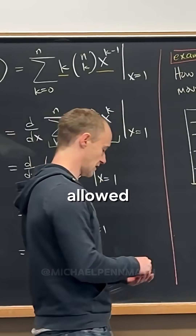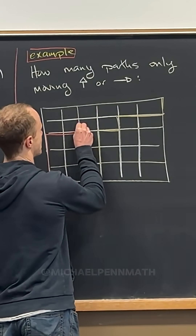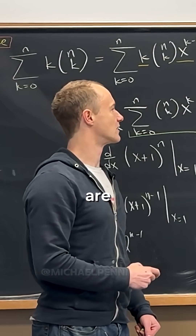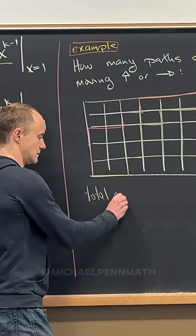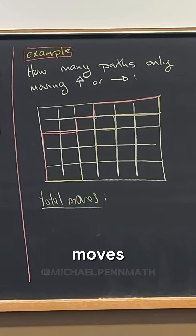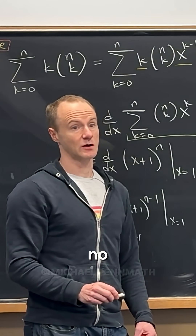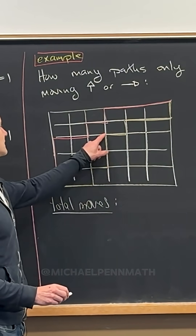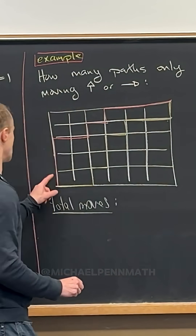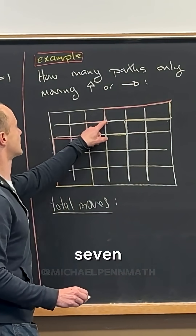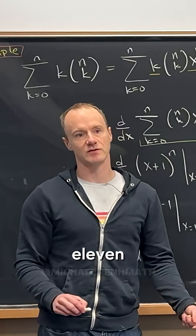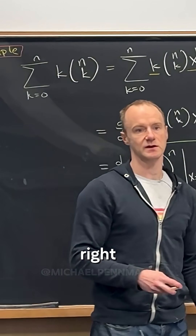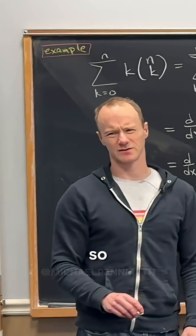Maybe that's another allowed path. So how many paths are there? Any path is going to have the same number of moves — one, two, three, four, five, six, seven, eight, nine, ten, eleven. There's going to be eleven moves regardless, because you can't do diagonals. So there are eleven moves total.